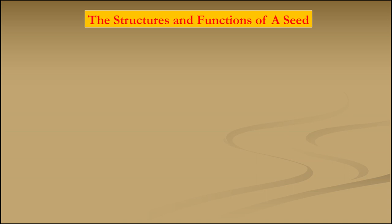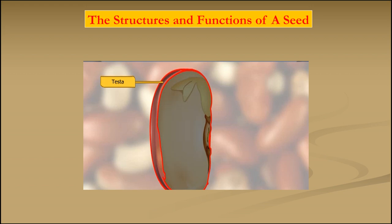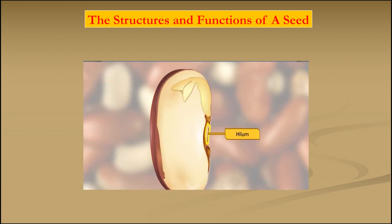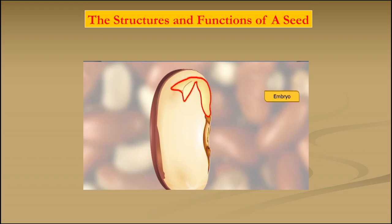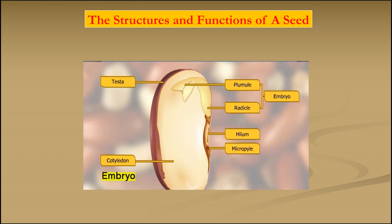Let's look at the structure of a seed. A seed consists of several parts. The outer covering of a seed is called the testa or seed coat. The testa has a scar called the hilum and a small hole called the micropyle. Inside the seed, there is an embryo made up of a radicle and a plumule. Most seeds have two cotyledons, and cotyledons are also part of the embryo. So the embryo is made up of a plumule, a radicle, and cotyledons.